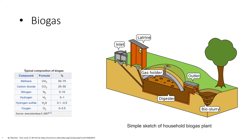Biogas can be used for any heating purpose such as cooking. It can also be used in a gas engine to convert the energy in the gas into electricity and heat. Biogas can be compressed after removal of carbon dioxide, the same way as natural gas is compressed to CNG, and used to power motor vehicles. In the United Kingdom, for example, biogas is estimated to have the potential to replace around 17% of vehicle fuel. It qualifies for renewable energy subsidies in some parts of the world. Biogas can be cleaned and upgraded to natural gas standards, when it becomes biomethane.